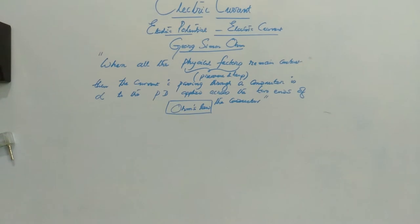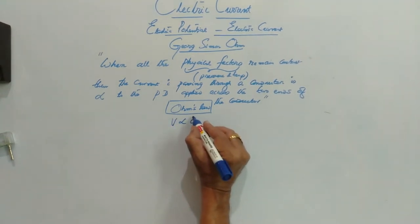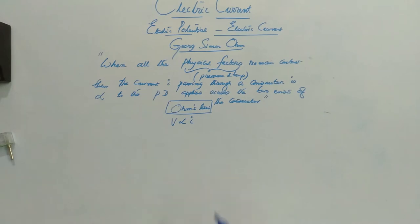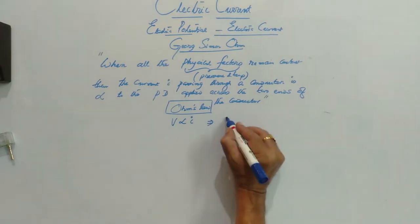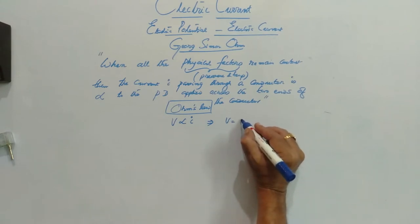So here V is directly proportional to I, which implies V is equal to some constant